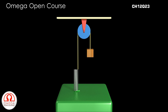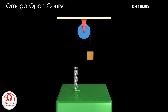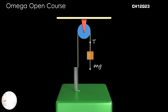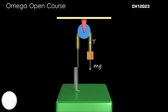When the block is at its equilibrium position, the net force on it is zero. This means the gravitational force acting on the block is exactly balanced by the tension in the string. But since the pulley is light, the tension in the string must be uniform throughout and must be equal to the spring force.